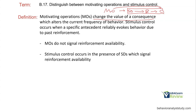Stimulus control, on the other hand, is related to our SDs, where we have something that's reliably evoking behavior. The first distinction is the MO is related more to consequences and value, while the SD is related more to the behavior. The MO has to do with the value of a consequence, while the SD or stimulus control has much more to do with the behavior. Stimulus control occurs when that specific antecedent or SD reliably evokes behavior due to past reinforcement.